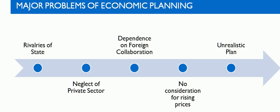The next point is no consideration for rising prices. Throughout the plan period, prices kept going up. The planners, while approving the cost of a project, took into consideration only prevailing prices and failed to take into account the rising prices, which upset the whole outlay, creating serious dislocation problems and slowing down the planned work.